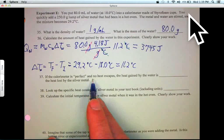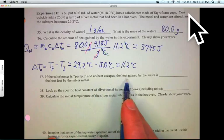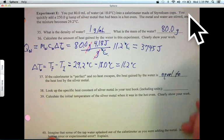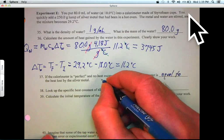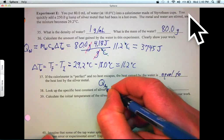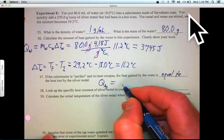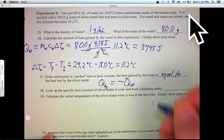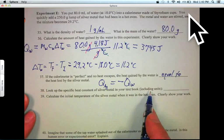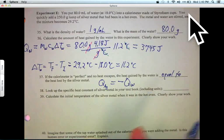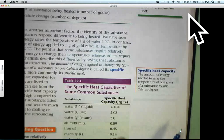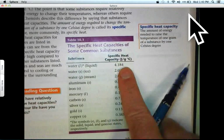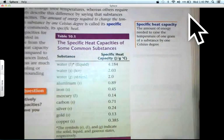If the calorimeter is perfect and no heat escapes, then the heat gained by the water is equal to the heat lost by the silver metal. In equation form, we would say Q of the silver is equal and opposite to Q of the water. All right. Looking up the specific heat of silver in our book, this is page 329, silver, 0.24 joules per gram degree C.